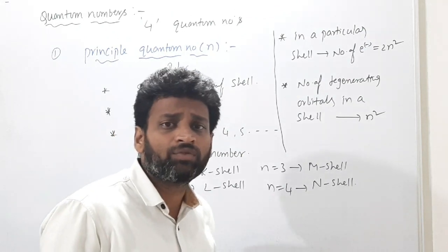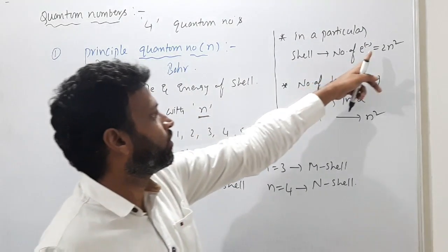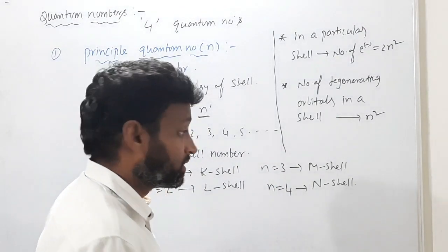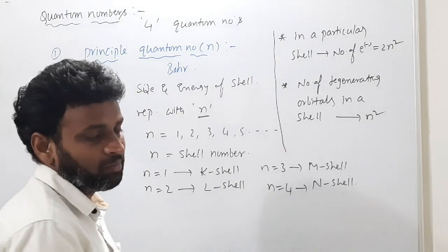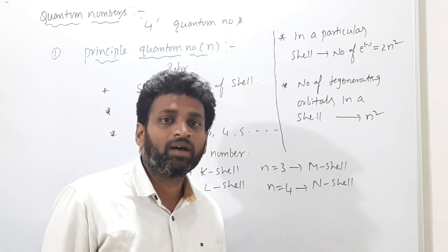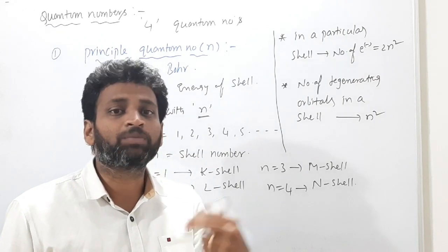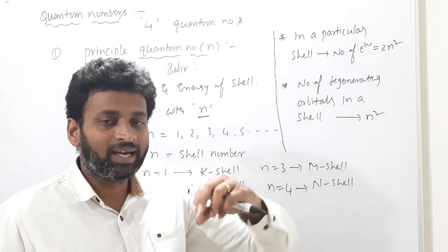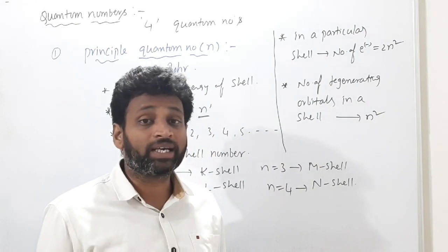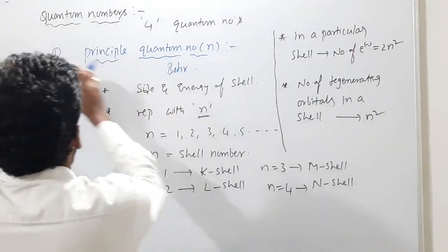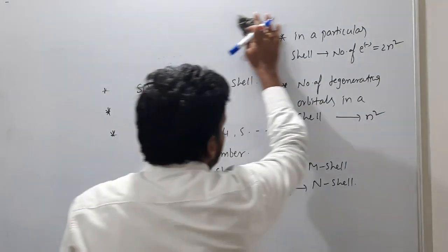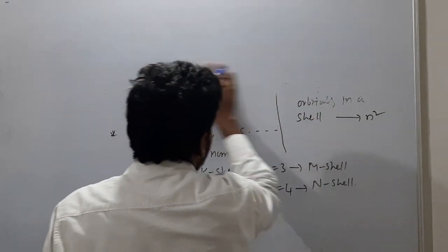The principal quantum number allows us to understand only about shells. But we cannot understand what exactly a subshell is from this alone — the electron is not only present in a shell; the shell is again classified into subshells. That's why we move to the next quantum number. First we discussed the principal quantum number; next we will discuss the azimuthal quantum number.